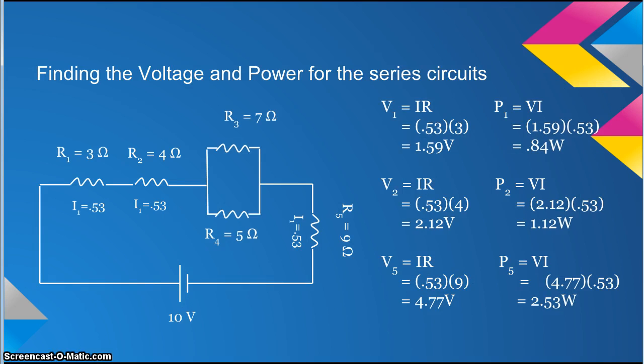In the first video, Combination Circuits, you learned that series circuits have the same current flowing through each resistor. R1, R2, and R5 are all connected through series. Therefore, the current is equal to the total current, which is 0.53.